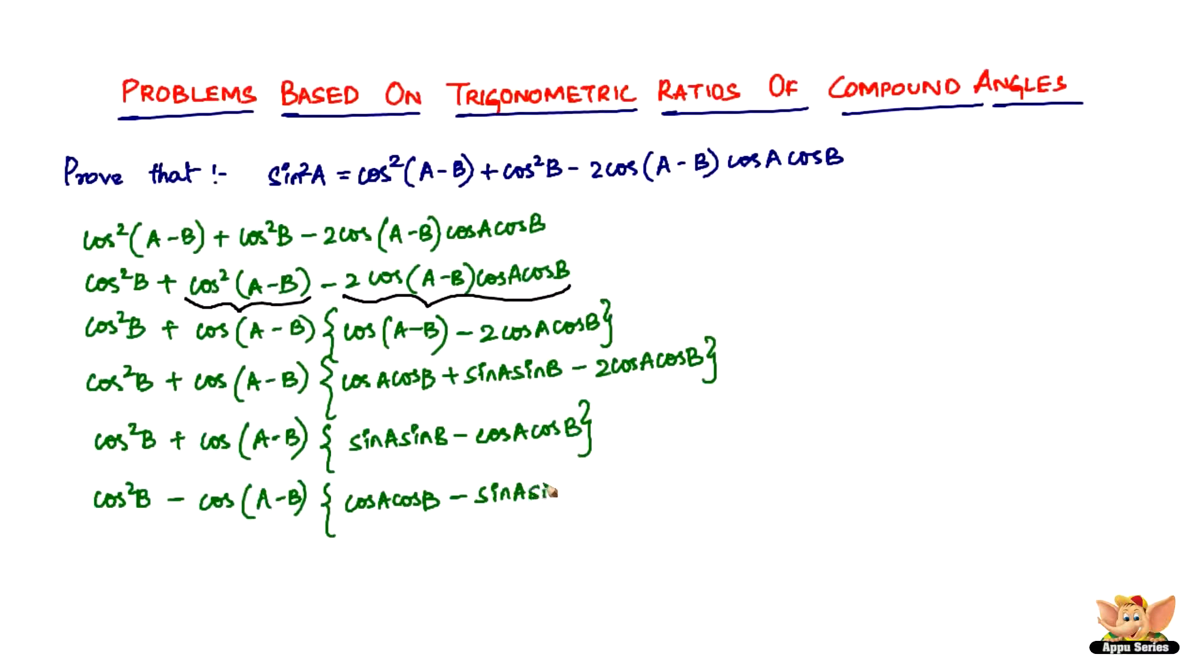So now I think you're familiar with what formula it is. It is, of course, cos(A+B). So we're going to get cos²B minus cos(A-B). This whole thing will be written as cos(A+B) because that's what it is.